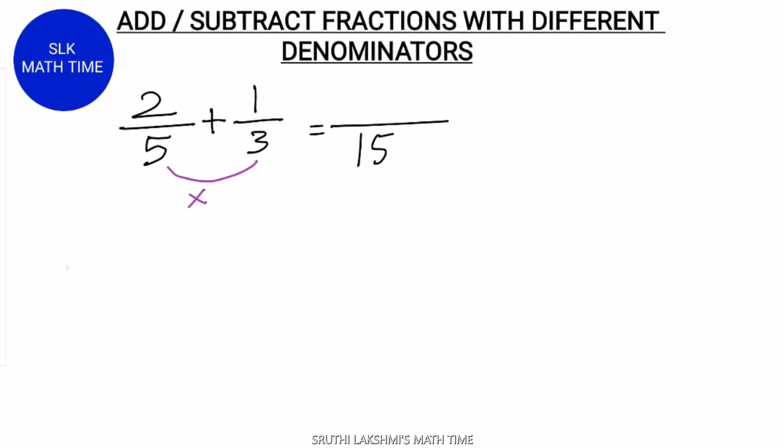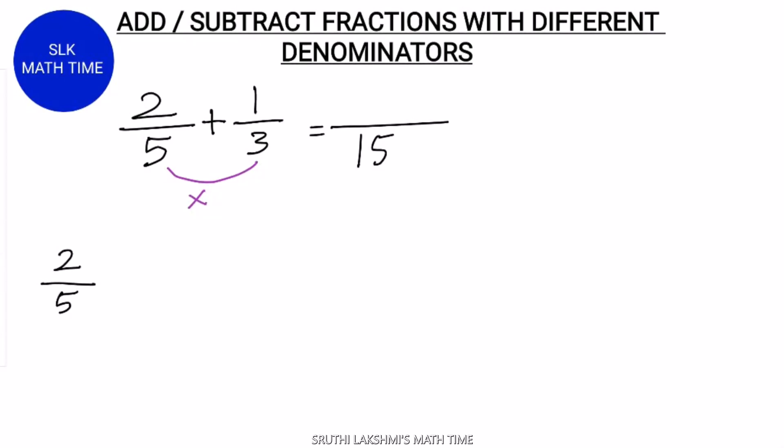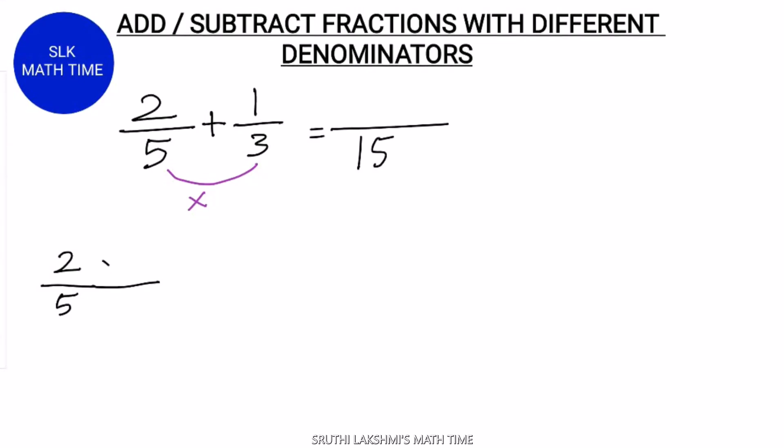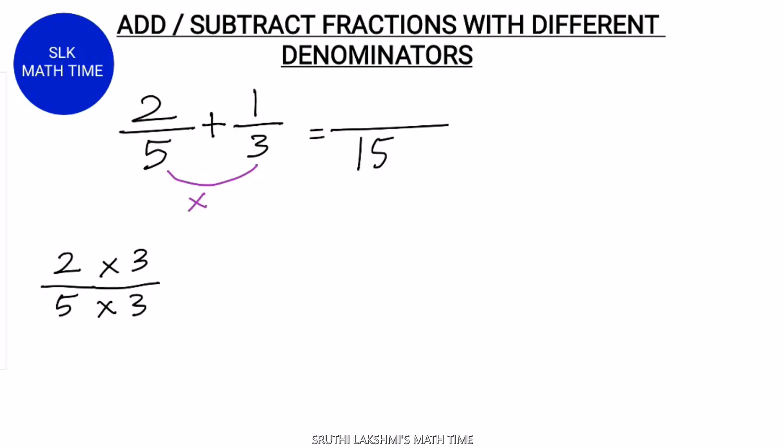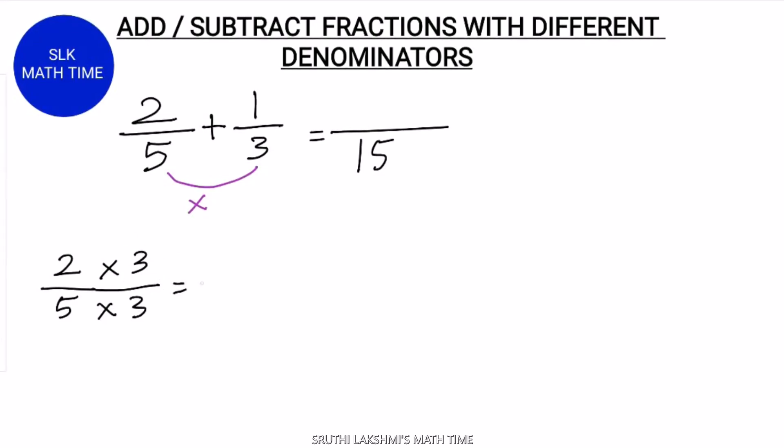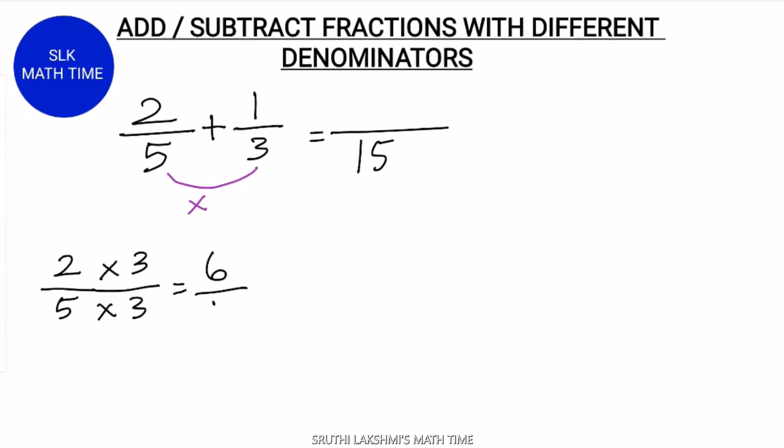Now, see the fraction 2 by 5 that we are adding. We have to multiply it with 3, both the numerator and the denominator, because 5 times what equals 15? 3. So we multiply the numerator and the denominator with 3. 2 into 3 is 6 and 5 into 3 is 15. So 6 by 15.